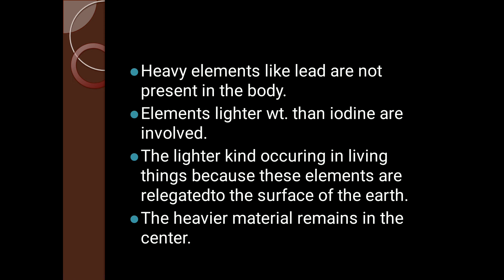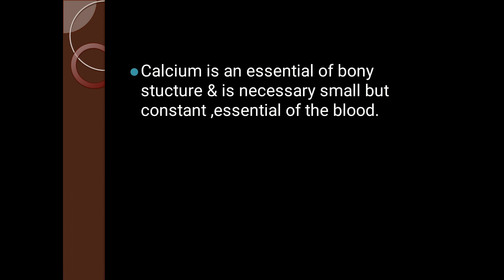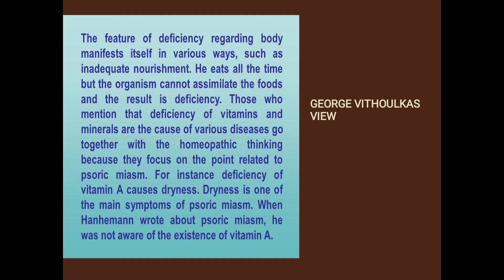Heavy elements like lead are not present in the body; only elements lighter than iodine are involved in body construction. Lighter elements occur in living things because they are relegated to the surface of the earth, while heavier material remains at the earth's center. Magnesium is found throughout the body; a magnesium-free diet causes convulsions. Manganese deficiency produces sterility, and calcium is essential for bony construction.